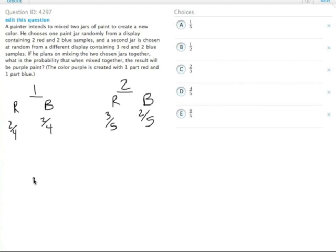So if he gets the red from the first one and the blue from the second one, that's going to be one set of probabilities, whereas blue from the first and red from the second will be a second. And we will add those two probabilities together to come up with a total probability of getting purple.